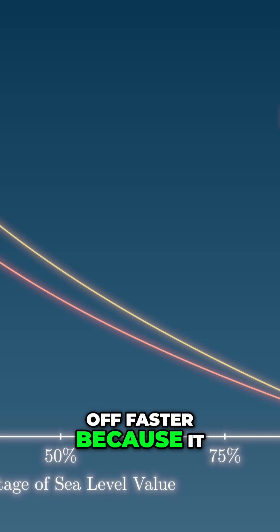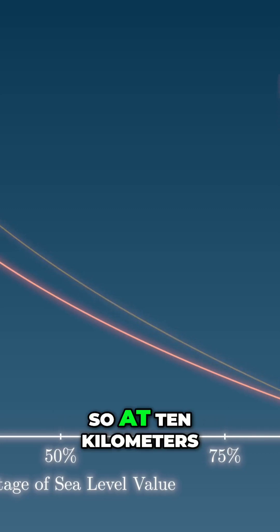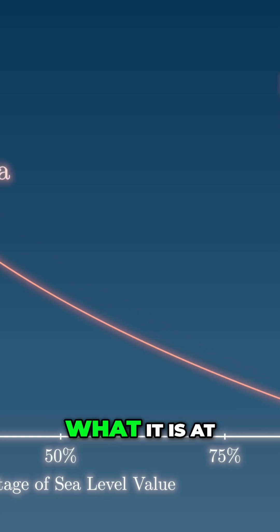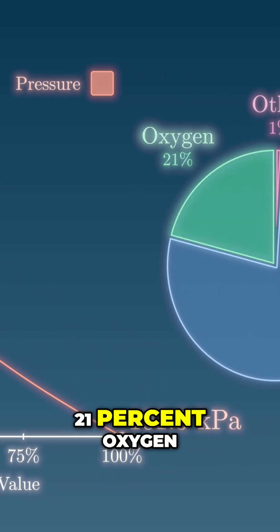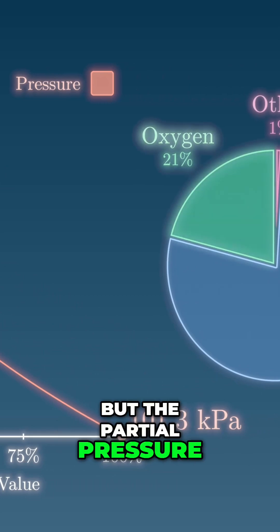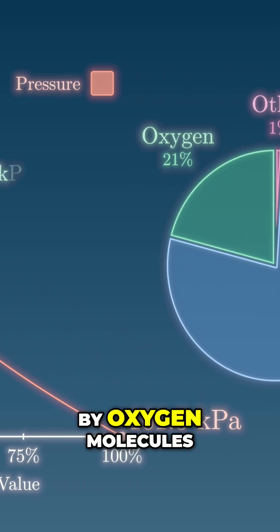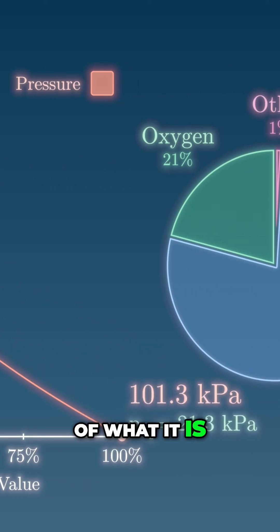Air pressure actually falls off faster because it depends on the weight of all the air above you. So at 10 kilometers, the air pressure is only a quarter of what it is at sea level. To be clear, the air is still 21% oxygen, but the partial pressure of oxygen — the pressure exerted solely by oxygen molecules — is around 5.5 kilopascals, which is a quarter of what it is on the ground.